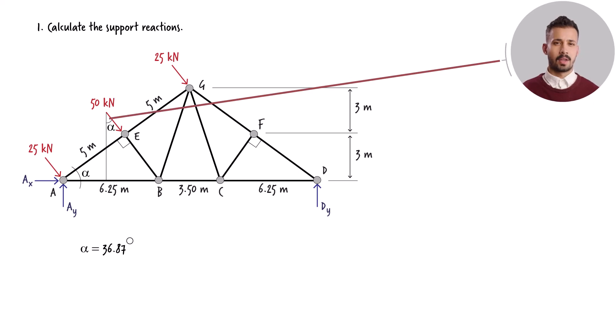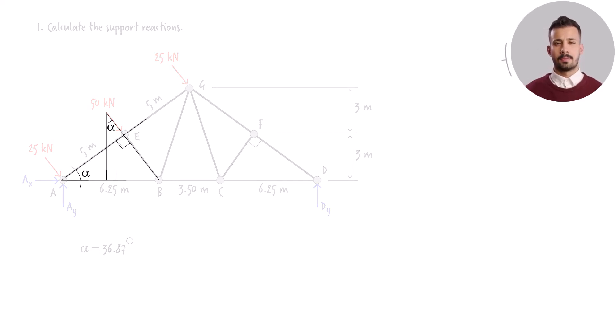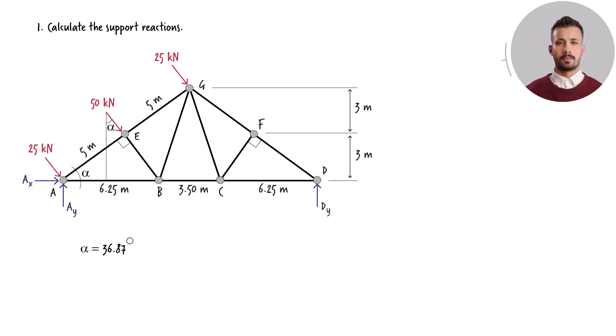This angle also equals alpha. Why? Because these two angles have perpendicular sides. Similarly, the angle the other applied loads make with the vertical axis equals alpha.